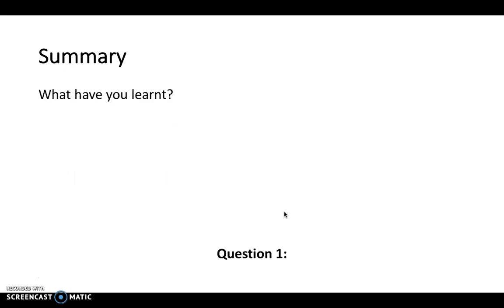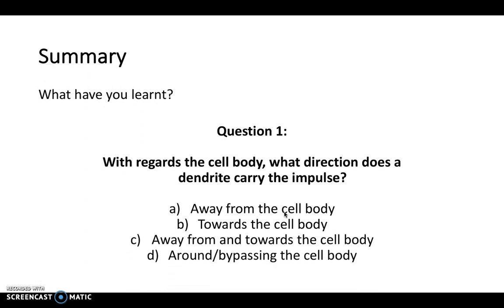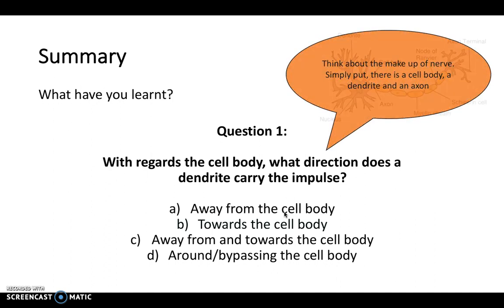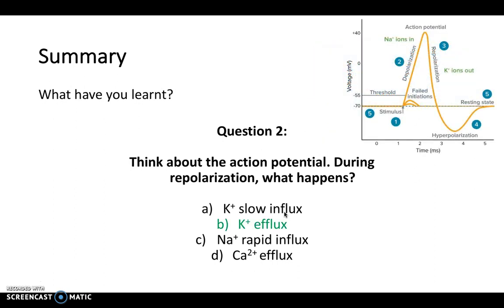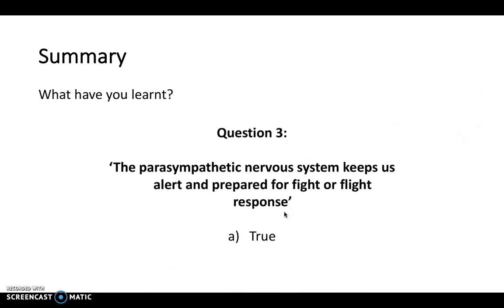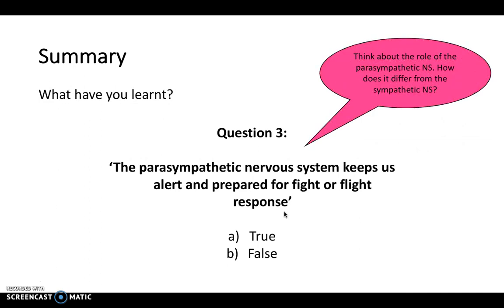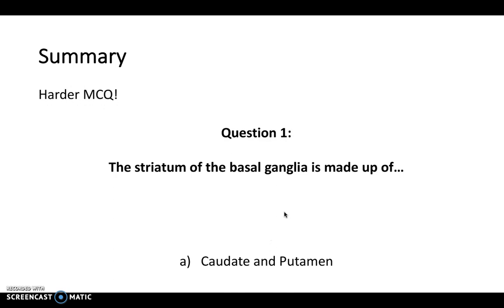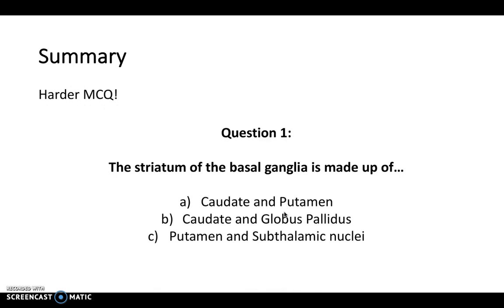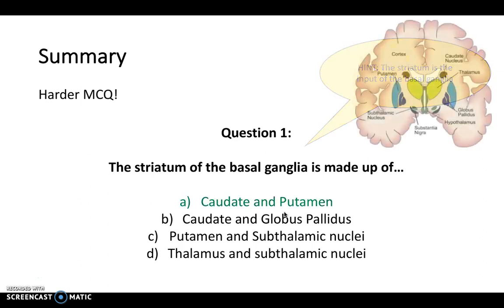In summary, here are some MCQs. With regards to the cell body, dendrites carry impulses towards the cell body; axons carry them away. For repolarization: sodium is responsible for depolarization, potassium is responsible for repolarization. The parasympathetic nervous system does not keep us alert for fight or flight — it is the sympathetic nervous system that's about fight and flight; it is the parasympathetic nervous system that controls resting and digesting. The striatum of the basal ganglia is made up of the caudate and putamen — they are the striatum which modulates the input of the basal ganglia.